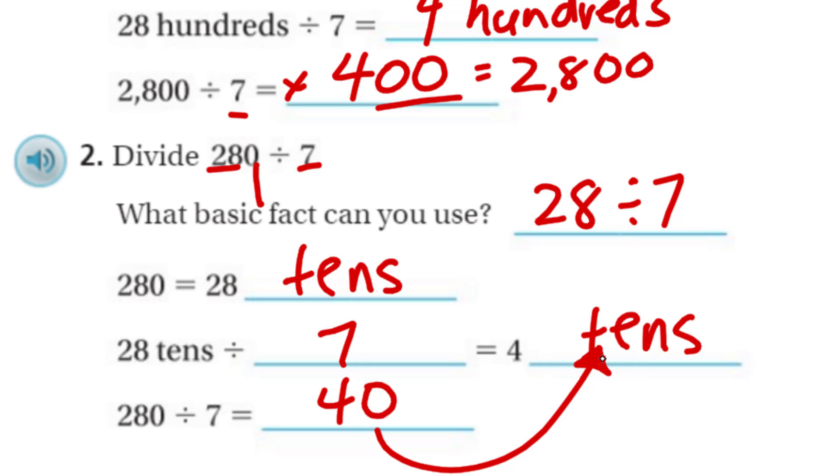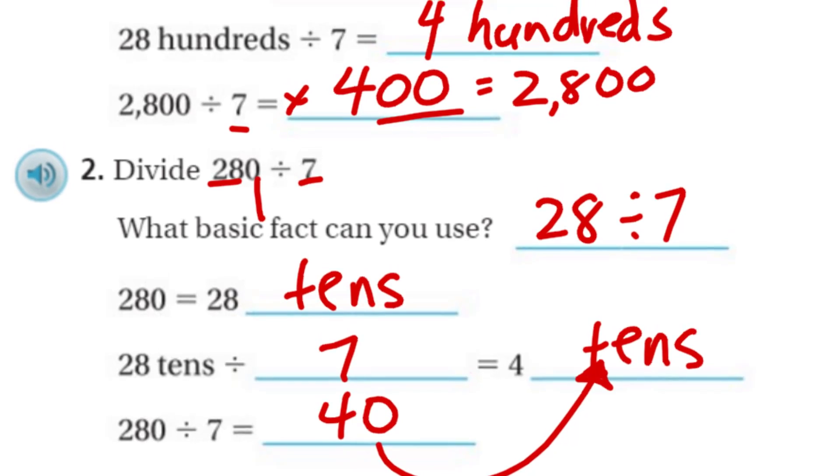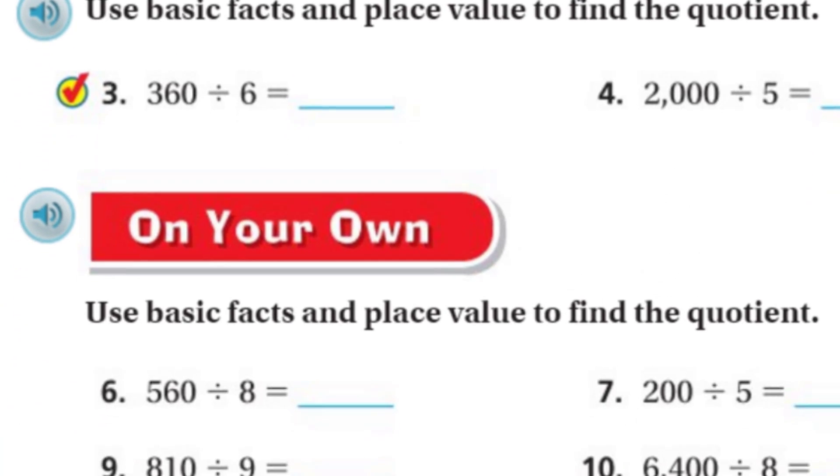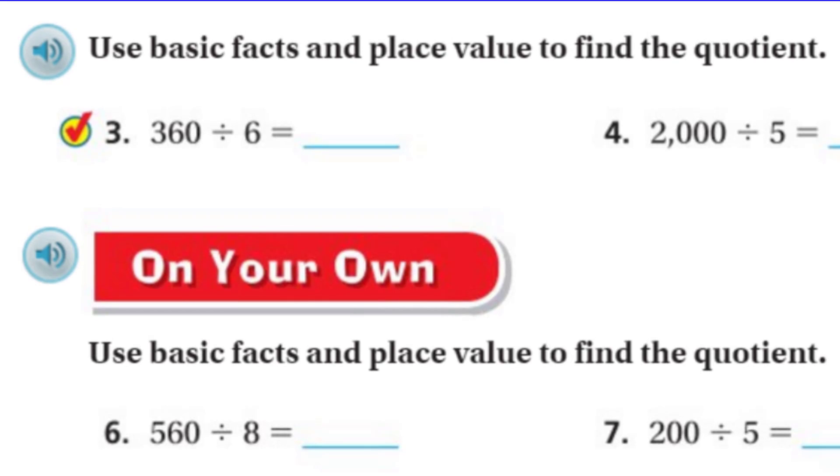Next, we have divide, 280 divided by 7. Simple fact. You can see it right there. I keep saying simple fact. They call it basic fact. Same thing. You say tomato. I say tomato. 280 is equal to 28 tens. They're trying to sneak that one by me because we only had one power of 10 right there. 28 tens divided by 7 is going to equal 4 tens. So then finally, 280 divided by 7 is going to equal 40 because 40 is equal to 4 tens.